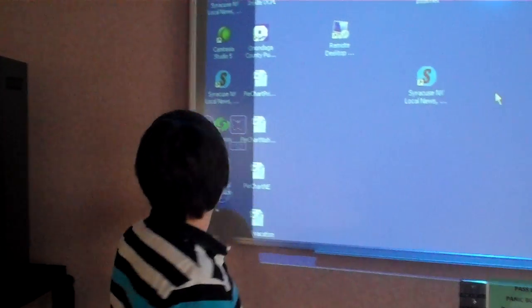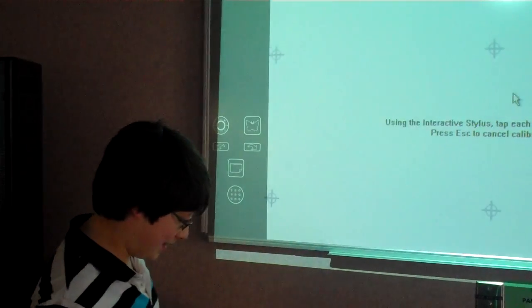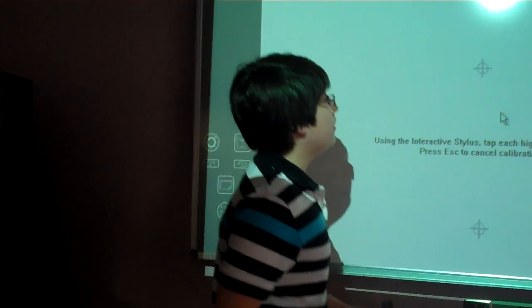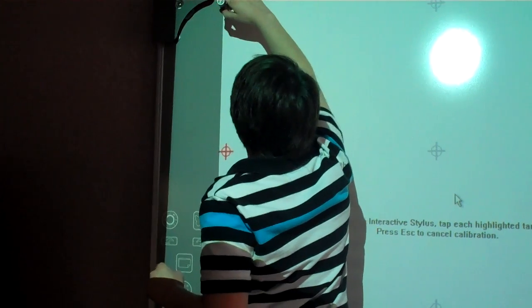After you're done with that, you have to push this button right here. This is the calibration button. It tells the digital board where the projector's location is.